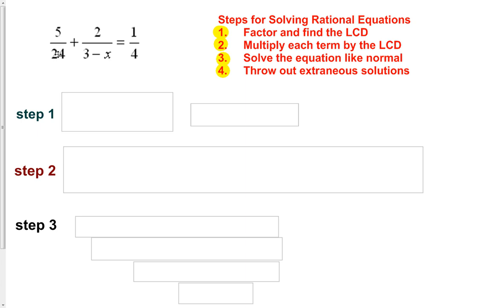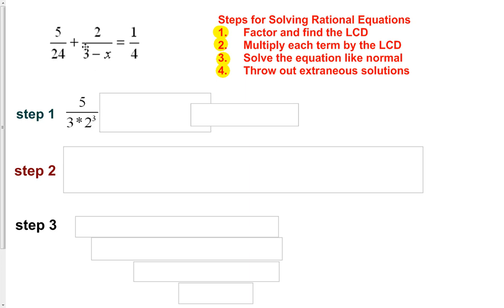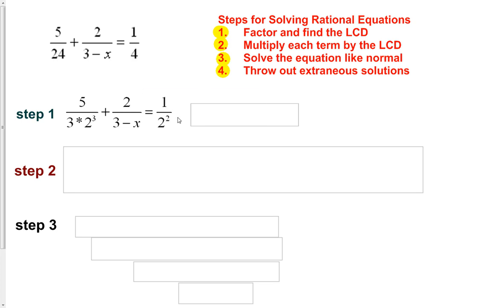First thing we want to do is factor our denominators. I see a 24 here. I know that 24 is 3 times 8, and 8 is 2 cubed. So my factored denominator here is 2 cubed times 3. The term 3 minus x stays as is — it can't be factored any further. And 4 is 2 squared.